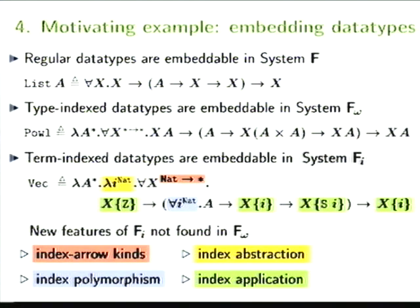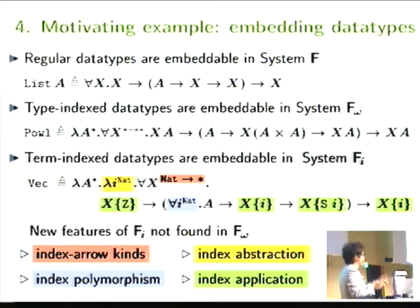First of all, we need a new arrow that goes not from something constructed by stars, but we would want to have the type constructor to expect a term of value. So we need a new kind, which is called an index arrow kind. Of course, you would need polymorphism over values, not only types, because we want to say that cons is defined for all lists of all lengths. You would also need an abstraction and application, and I would just highlight the application for indices with curly braces.